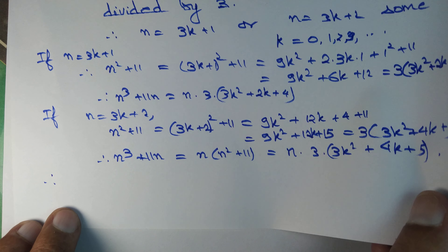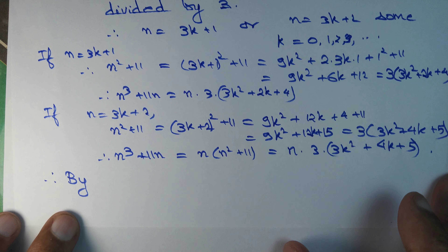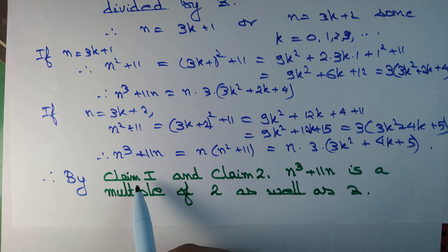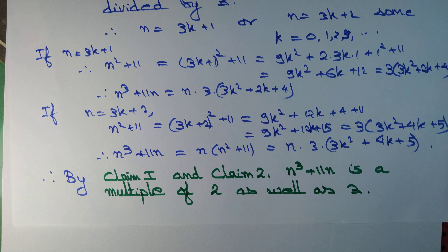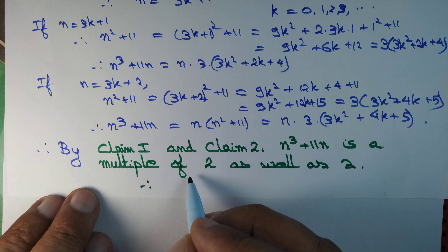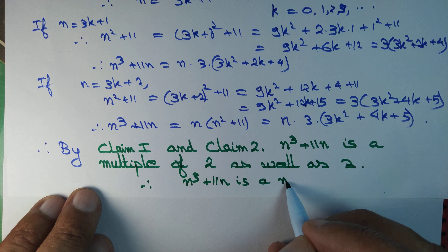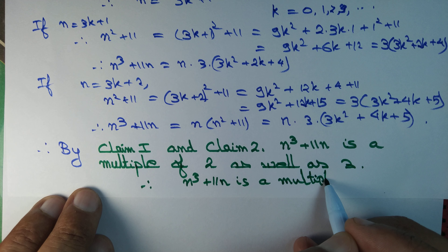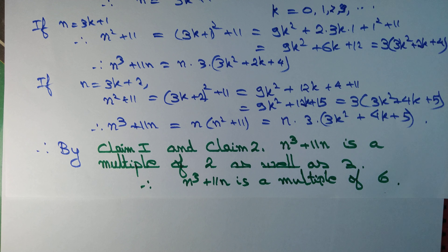Therefore, by Claim 1 and Claim 2, n³ + 11n is a multiple of 2 as well as a multiple of 3. We have proved both claims. Combining these two, since it is a multiple of both 2 and 3, we conclude that n³ + 11n is a multiple of 6 — in other words, n³ + 11n is divisible by 6.